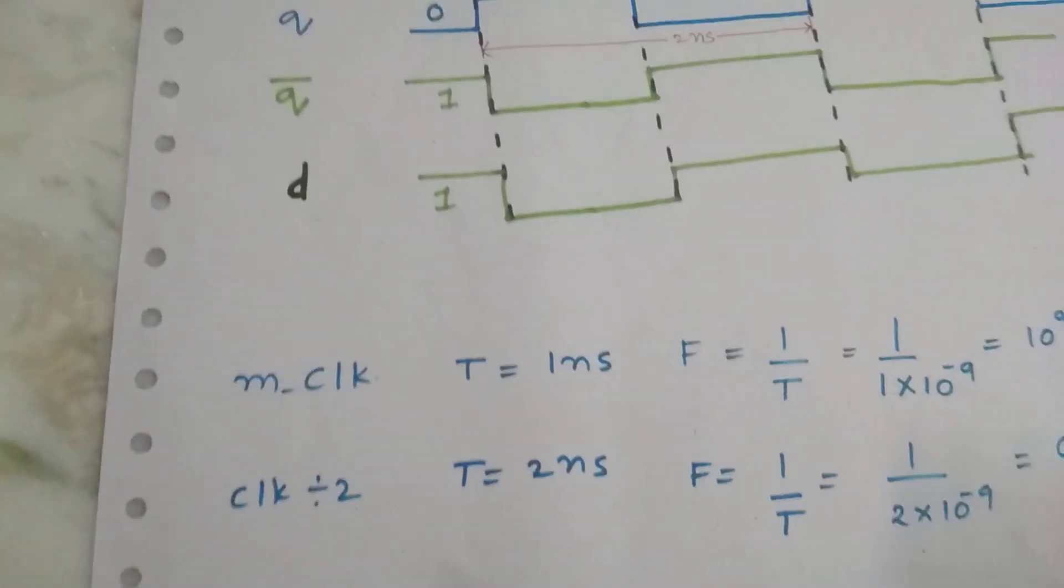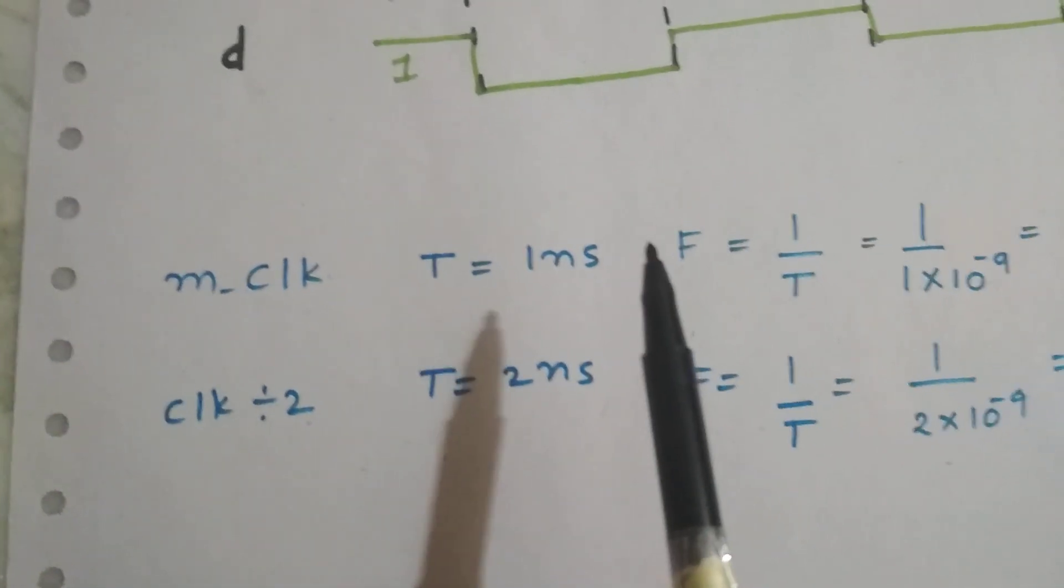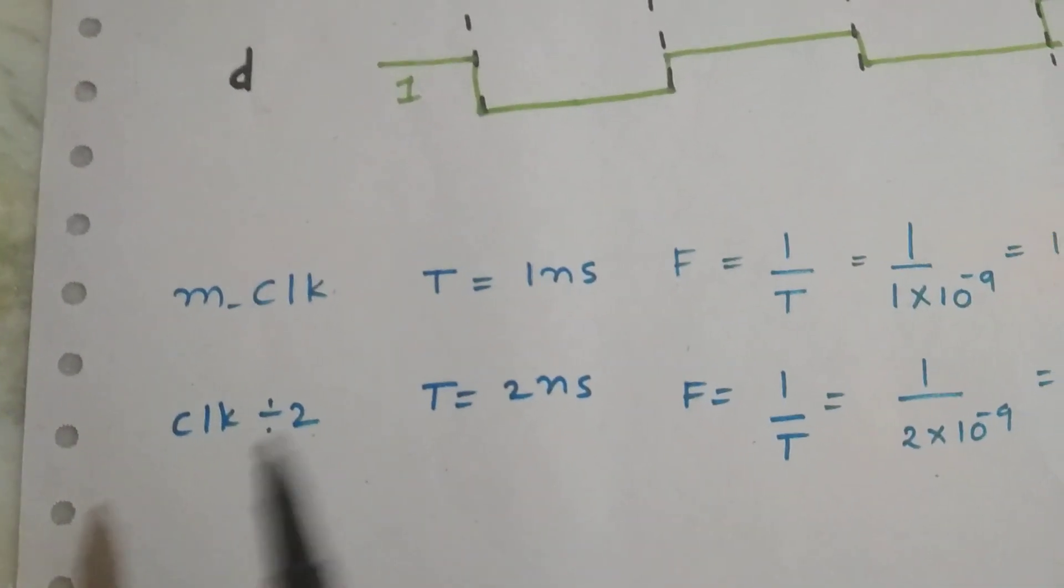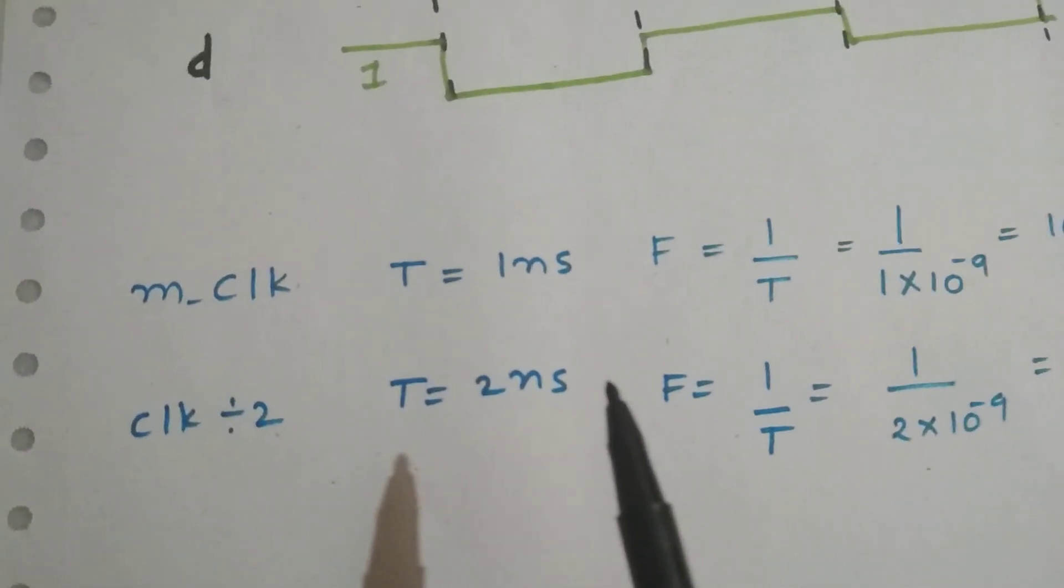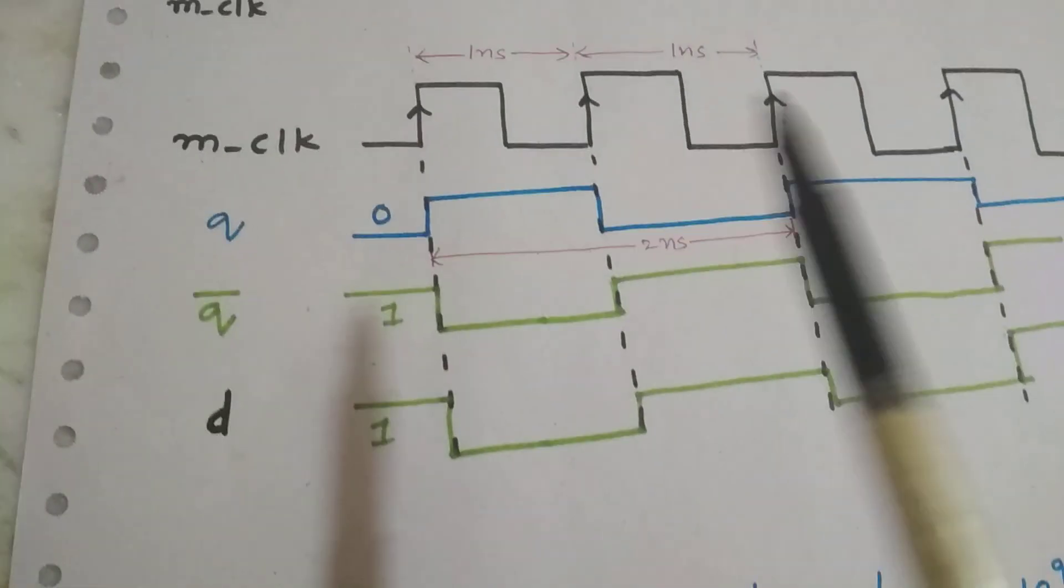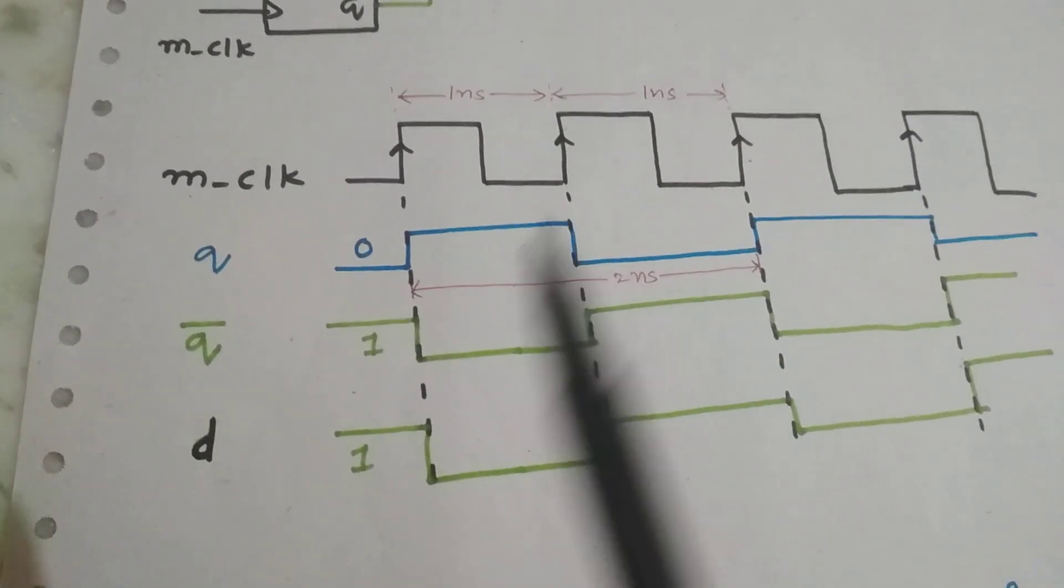As you can see, our master clock time period is 1 nanosecond. Our clock divided by 2, the generated clock, is 2 nanoseconds. We got this from the waveforms. You can clearly see how we got it.